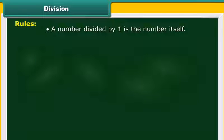Let us look at some rules of division. A number divided by 1 is the number itself. 34671245 divided by 1 is equal to 34671245.